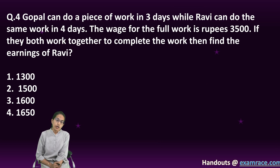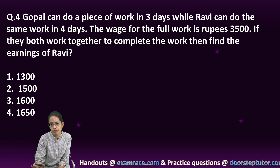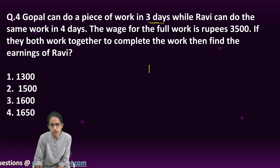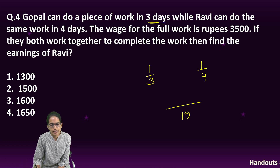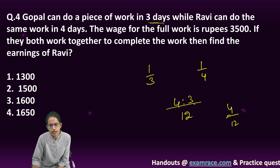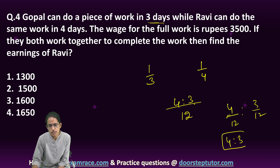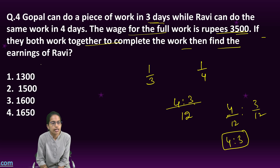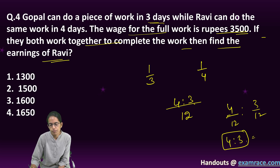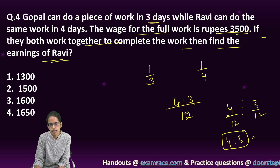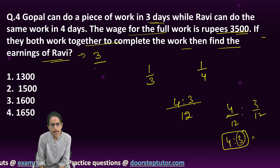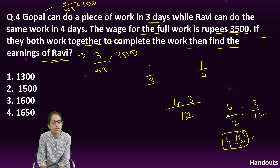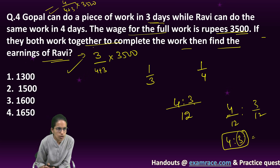The next question is a work and rate problem. Gopal can do a piece of work in 3 days, so his one day's work is 1/3. Ravi can do it in 4 days, so 1/4. Taking LCM as 12: the ratio of work is 4:3. The wages for the full work is 3500. Ravi's share is 3/(4+3) × 3500, and Gopal's share is 4/(4+3) × 3500. A very direct problem.